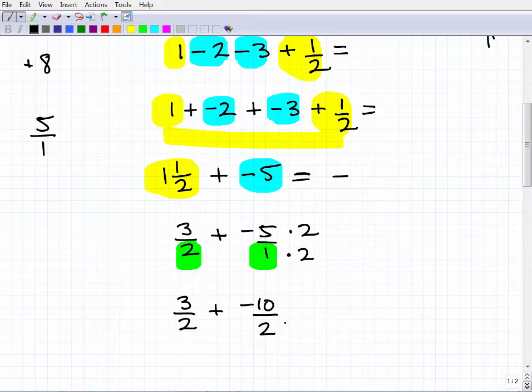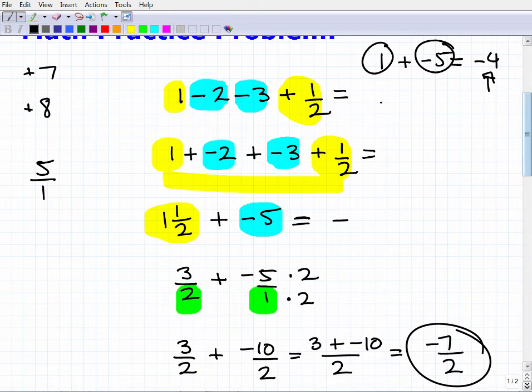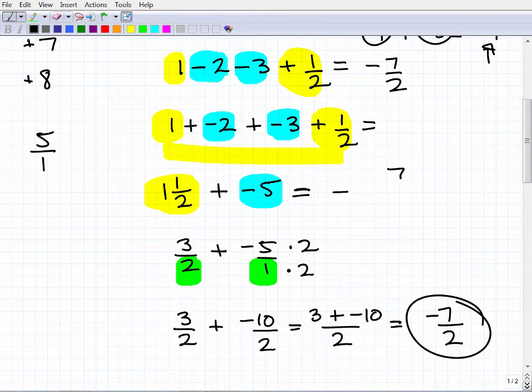So now I have 2 fractions. And you can see here, I need to find the LCD. Let's use a different color here. So I have a 1 here, I have a 2 here. So I need to multiply this guy over here by 2. So I have a lowest common denominator of 2. So I have 3 halves plus negative 10 over 2. So what do I do? Well, with fractions, once you have the same denominator, you keep that denominator. And now I have 3 plus, let's just do it the long way, show each step, 3 plus negative 10. I'm going to add the numerators. Once I have the same denominator, I can go ahead and add or subtract the numerators. So 3 plus negative 10 is going to be negative 7 over 2.